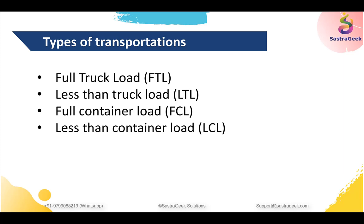A question came up: are types of carriage and legs the same? No. Types of carriage refers to precarriage, main carriage, on-carriage — the stages of the container journey. Precarriage means from shipper to the port, main carriage is the main ship leg, and on-carriage is from the destination port to the consignee. Legs are based on volume and size of your load — how you categorize the way you need to move goods. FTL, LTL, FCL, and LCL are industry standard terms, not just SAP terms.